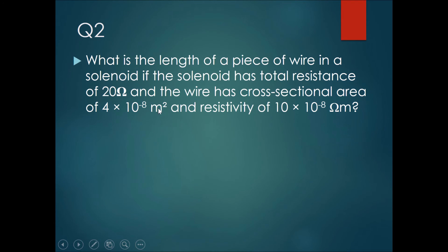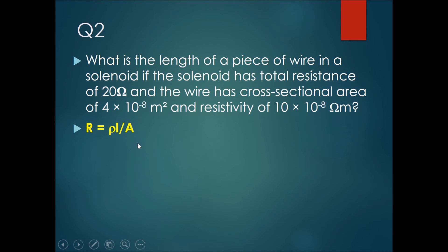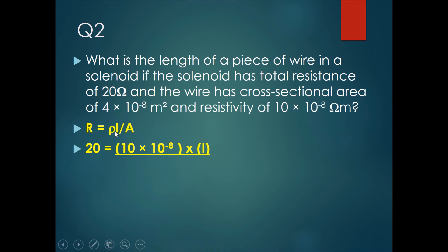Now let's try a similar question. What is the length of wire in a solenoid if the solenoid has a total resistance of 20 ohms, the wire has a cross-sectional area of 4 × 10⁻⁸ m², and a resistivity of 10 × 10⁻⁸ ohm meters? Using R = ρL/A and rearranging the formula, we can find that L is 8 meters.